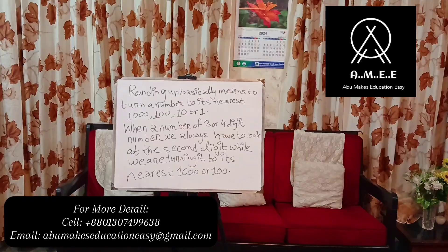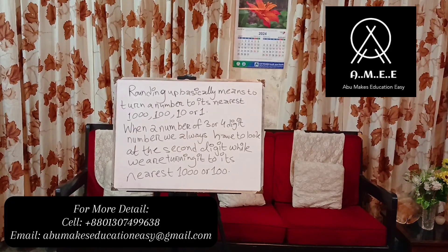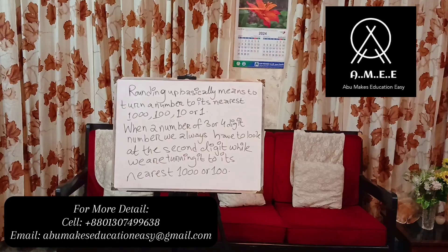Rounding up basically means to turn a number to its nearest thousand, hundred, ten, or one. So when we are given a number of three or four digits, we always have to look at the second digit while we are turning it to the nearest thousand or hundred.